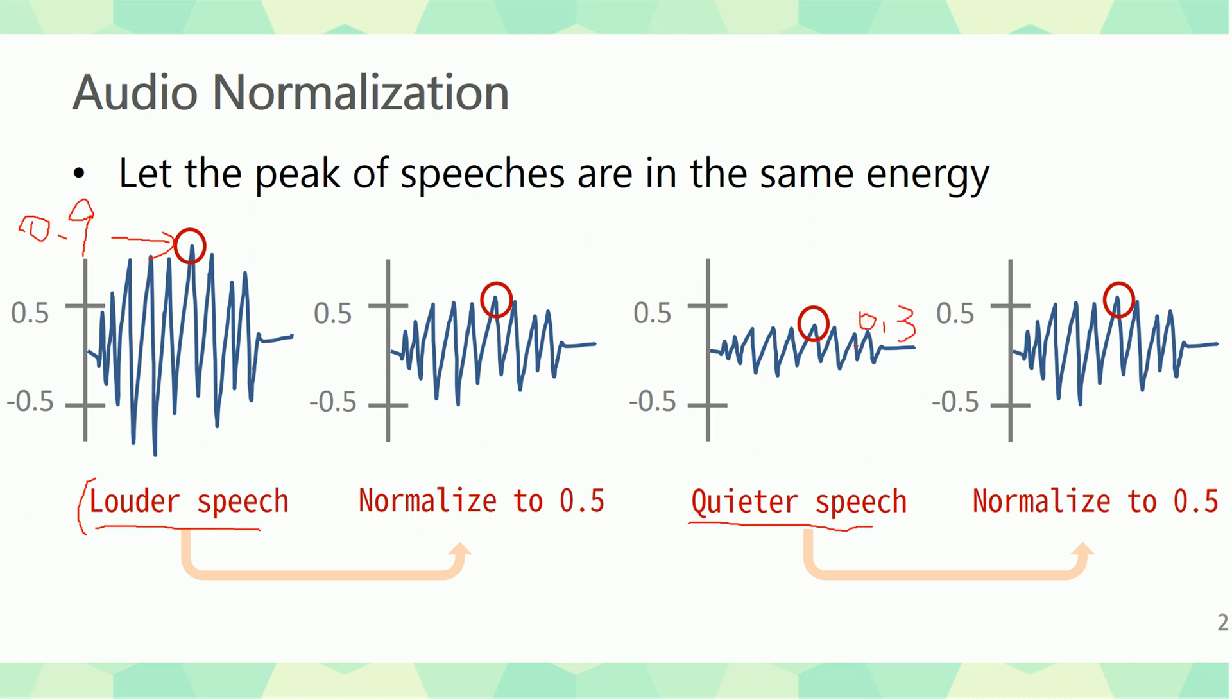So how do we normalize these two different audio files? We can take the peak and scale it to 0.5, and then this 0.3 we scale it to 0.5. So after this processing, these two audio files will have a similar amplitude. They will be more close and the value is more similar with each other.